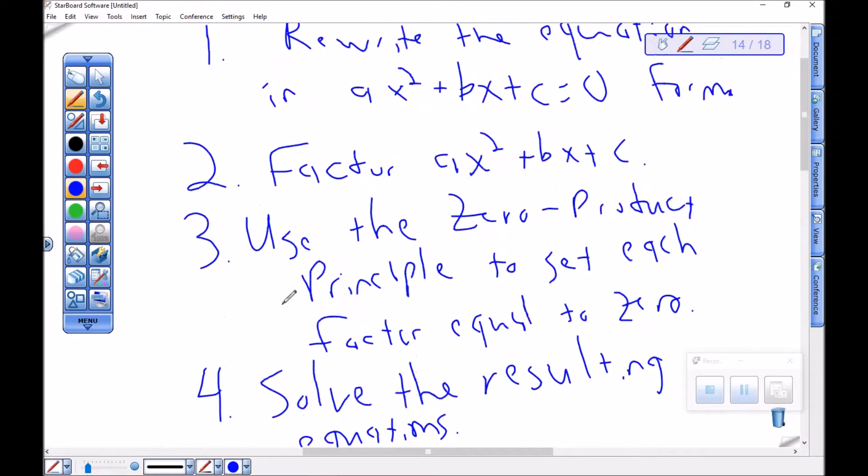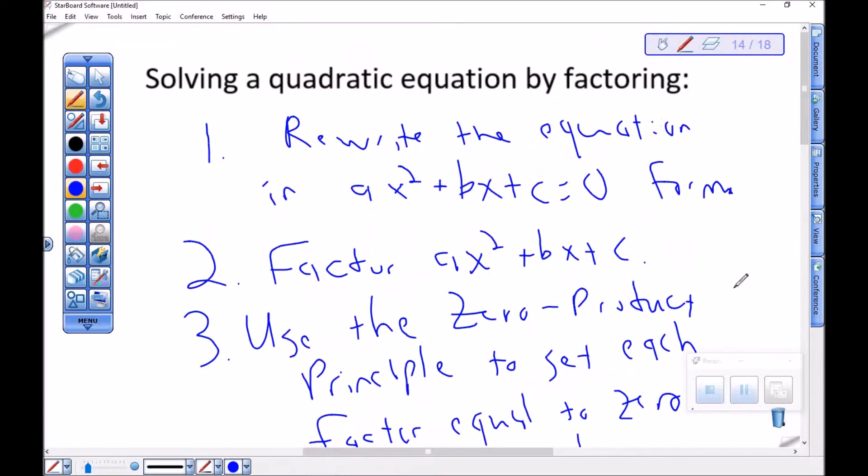A couple of notes. Just because you can't factor doesn't mean that your equation doesn't have solutions. It may mean that you just weren't able to factor, even though you could have. But it may also mean that it can't be factored. But just because you can't factor doesn't mean there aren't solutions. Doesn't mean there aren't real number solutions.